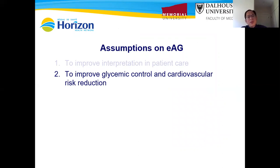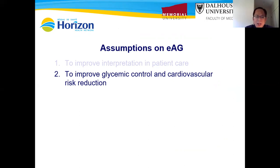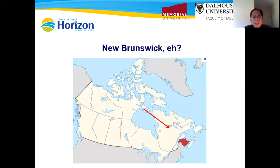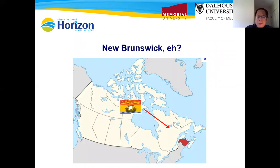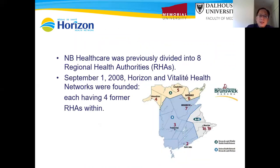The second assumption for EAG is that it is supposed to improve patients' glycemic control and cardiovascular risk reduction. To evaluate this assumption, we conducted a study in the province of New Brunswick, Canada. New Brunswick is a small province on the east coast of Canada, highlighted in red, with a population of about 750,000.